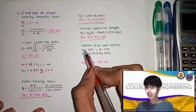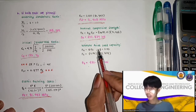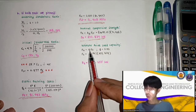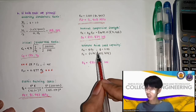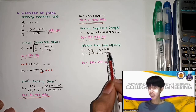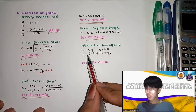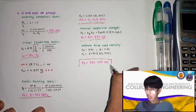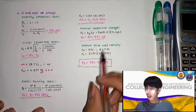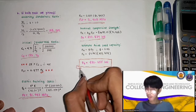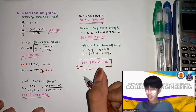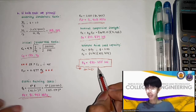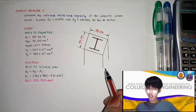With P_N known, we compute the ultimate axial load capacity using LRFD: P_U = φ × P_N, where φ = 0.90. Substituting: P_U = 0.90 × 477.839 = 430.055 kN. This is our answer for letter B — ultimate axial load capacity when both ends are pinned.